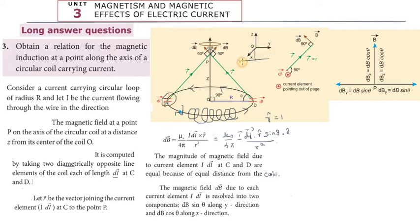This portion corresponds to dB cosθ and this is dB sinθ. The dB sinθ components from opposite elements cancel each other out, being in opposite directions. The dB cosθ components are in the same direction and add up along the axis.